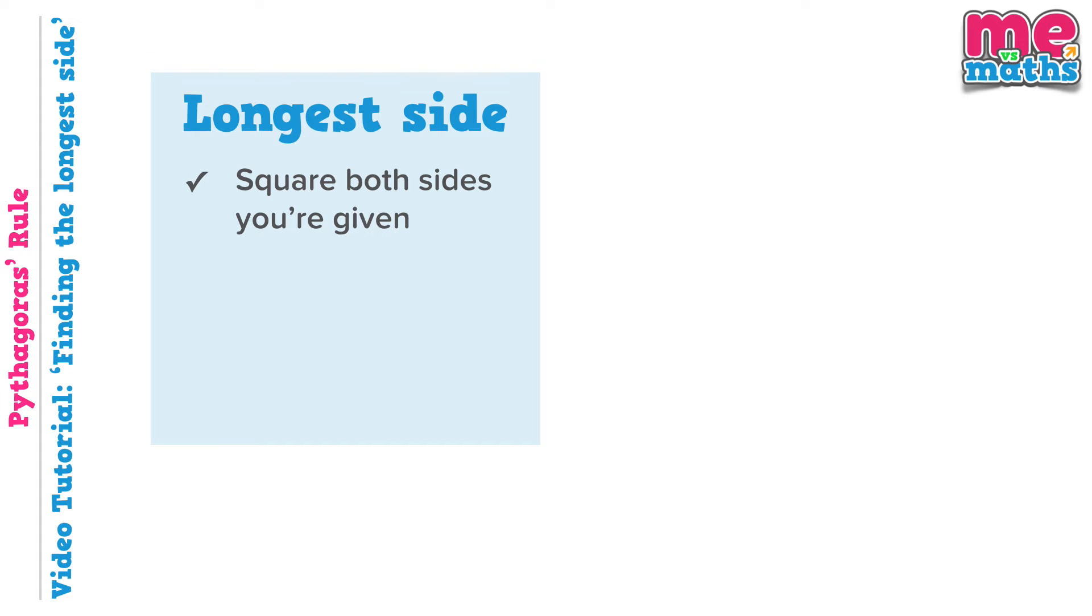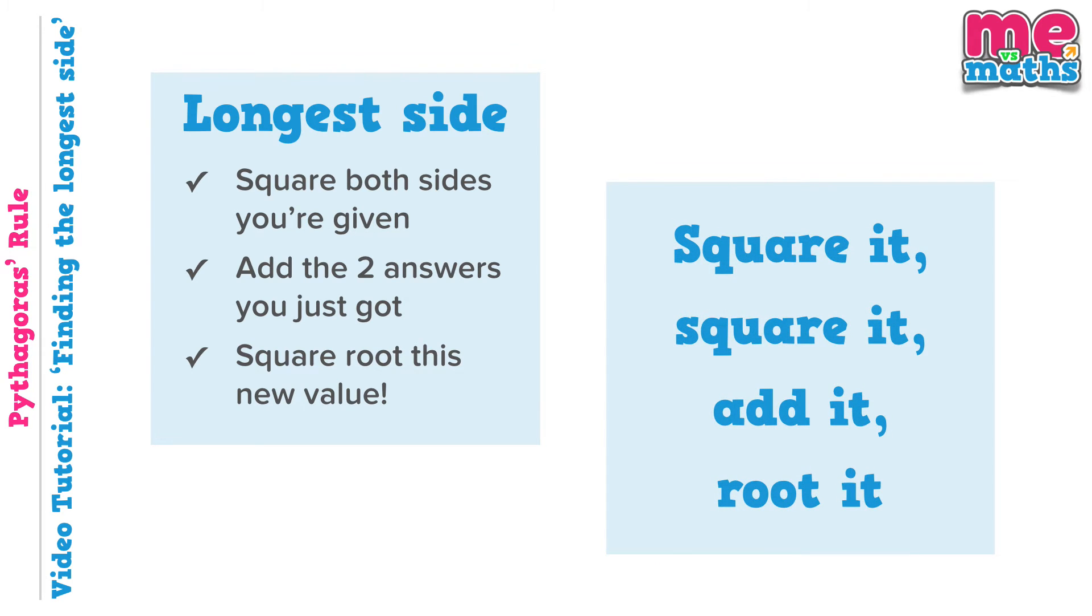We need to square both the sides that we're given. Then we add these two answers together, and that gives us the square of our longest side. So to find just the length of this side, we have to finally square root to find our answer. Now that's no catchier really than Pythagoras' rule was, so hopefully a simpler way to remember this is when looking for the longest side: square it, square it, add it, root it. I've always found that students tend to remember this version quite well.